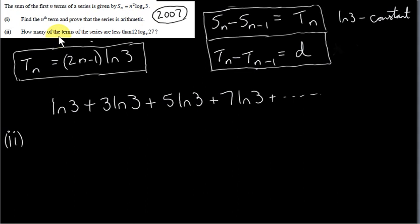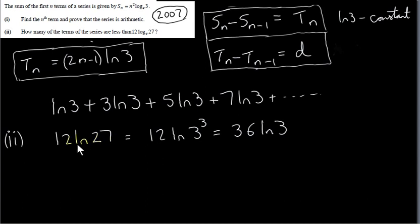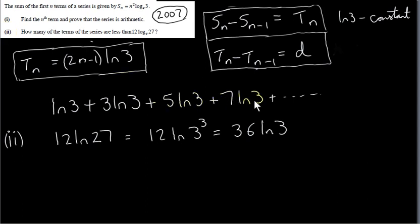In part 2, we want to find how many terms of this series are less than 12·ln27. Let's simplify 12·ln27: since 27 = 3³, we can bring the power down using log rules to get 12·3·ln3 = 36·ln3. So we want to find how many terms are less than 36·ln3.